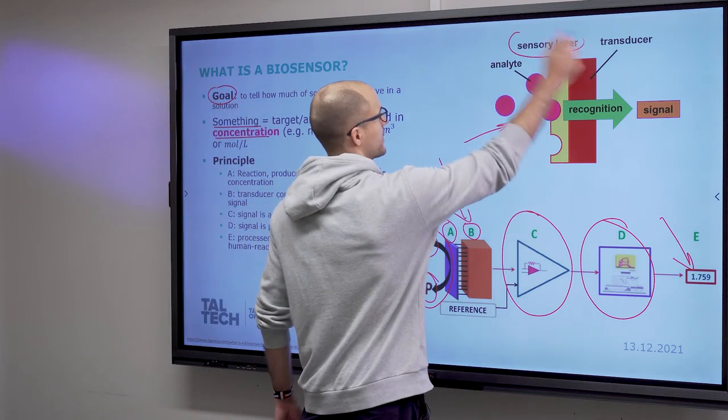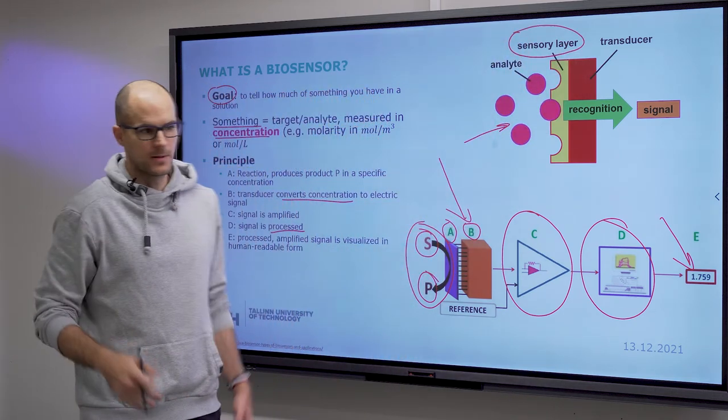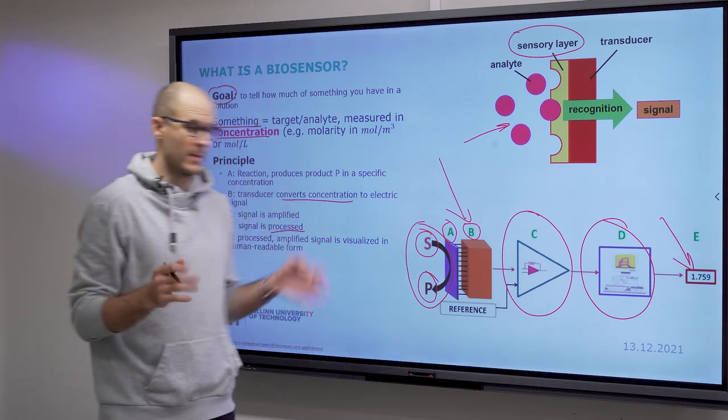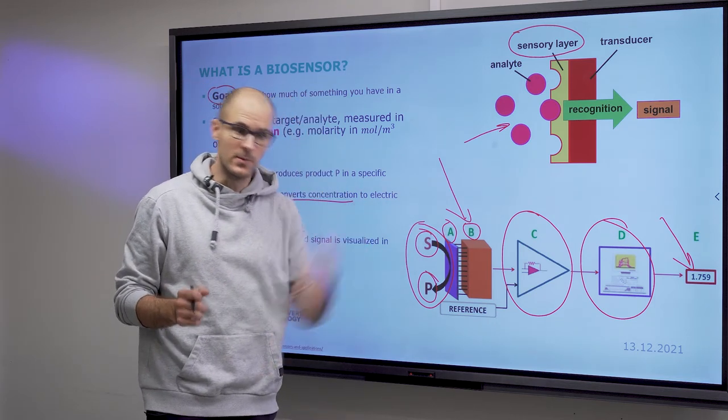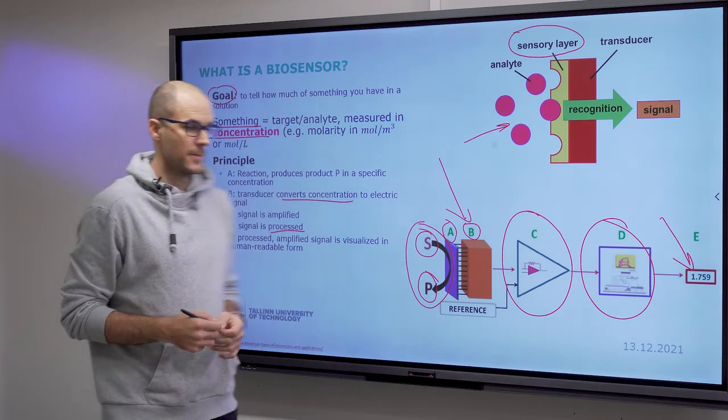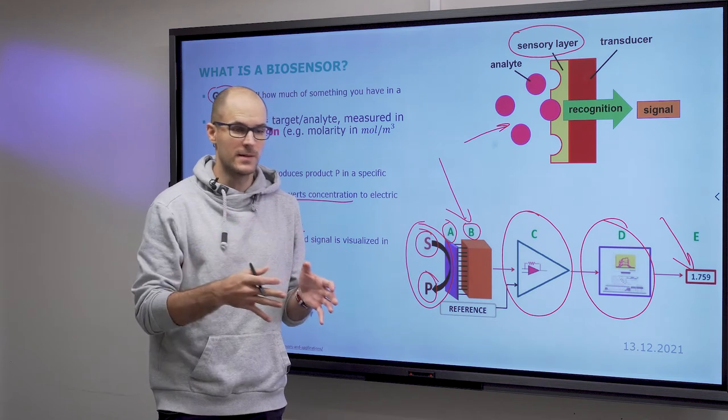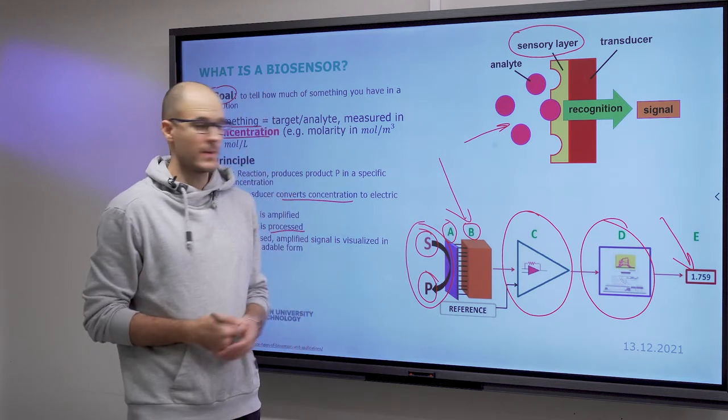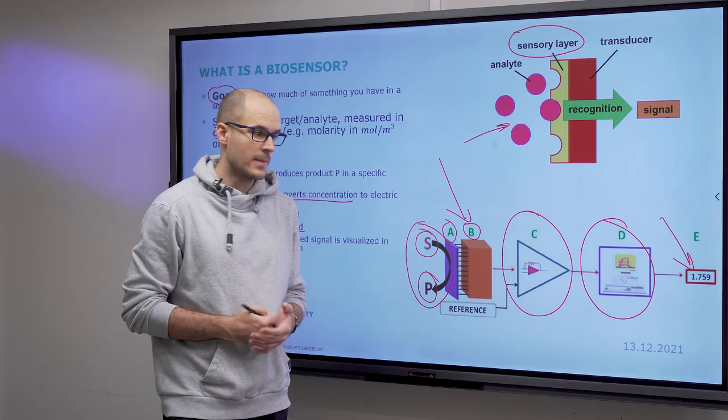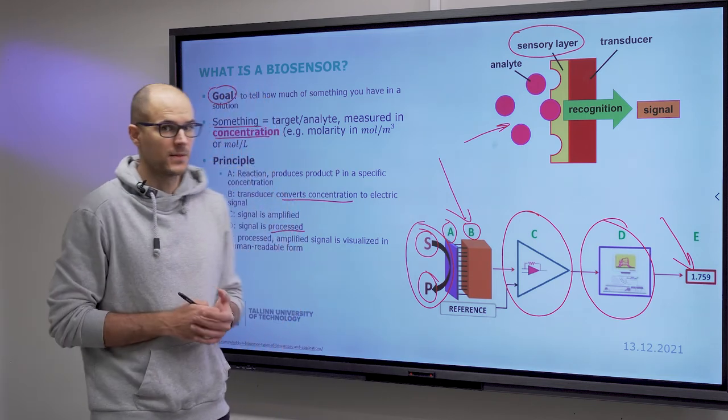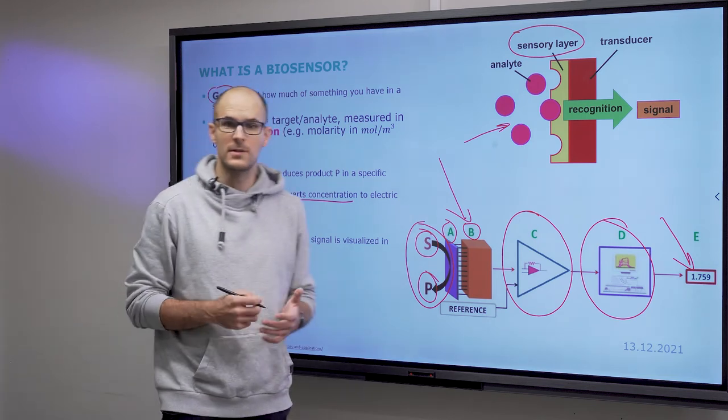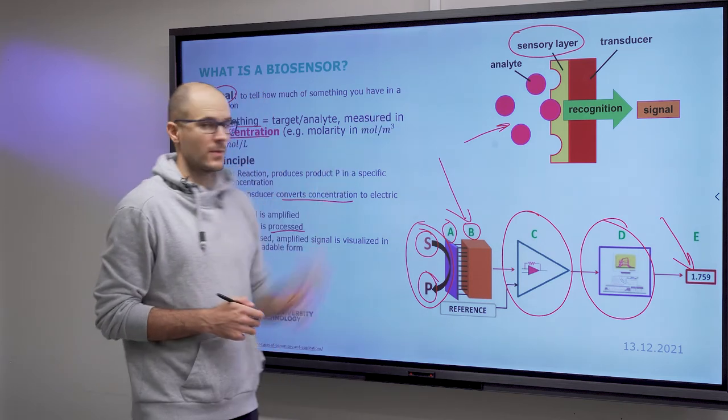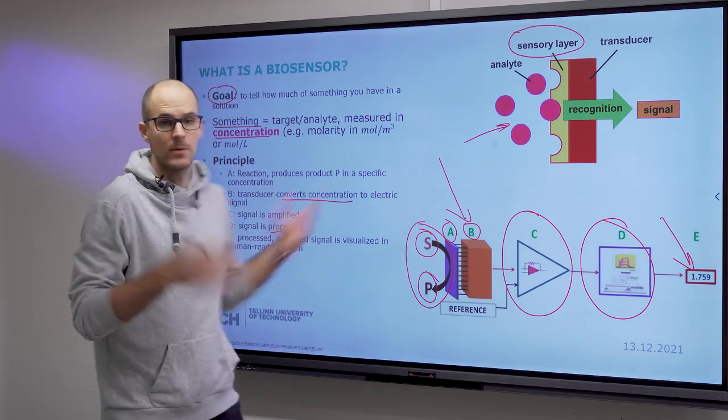And close up, the reaction with the interface looks like this. There is an active sensory layer, which can mean a number of things, but for the easiest example let's assume that you have a surface activated in a way that specifically binds the target molecule. For instance, let's say you want to bind in a pregnancy test—you want to bind hCG, chorionic gonadotropin—then the surface needs to be activated for that. Or for COVID tests, you want to bind the virus particle, then there needs to be a surface activated for that.